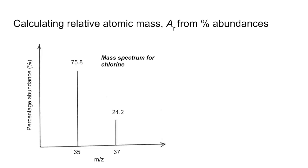So the different types of calculations now. So we'll start with how do you calculate relative atomic mass from percentage abundances. So there's a typical spectrum now, mass spectrum on the screen. That's for chlorine.